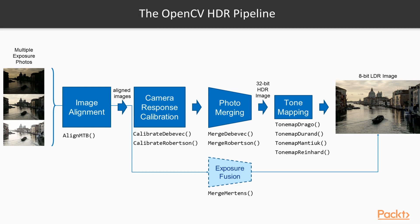OpenCV provides two calibration algorithms and a generic interface for adding new ones. The third step is the creation of the 32-bit HDR image by merging the 8-bit LDR photos. OpenCV provides several such algorithms, again via a generic interface. The last step is the tone mapping, where the 32-bit HDR image must be somehow remapped to an 8-bit image. This is a lossy process that generates a new image that attempts to preserve as much detail as possible.